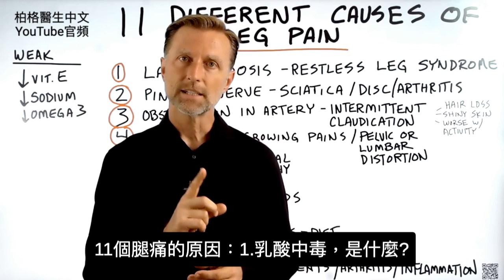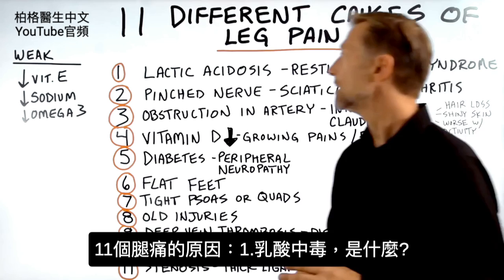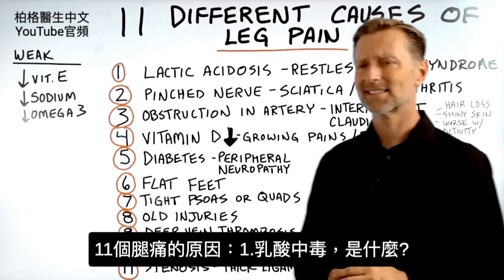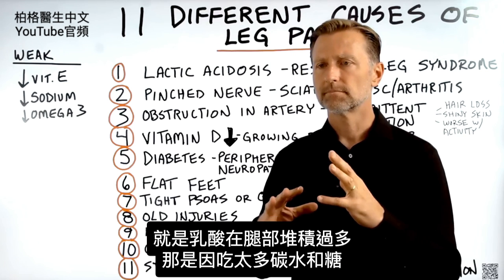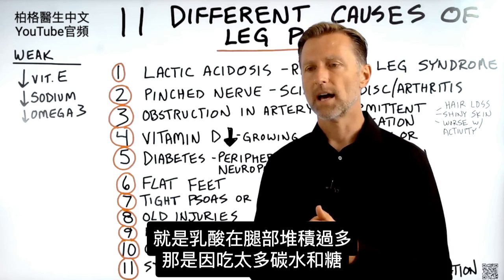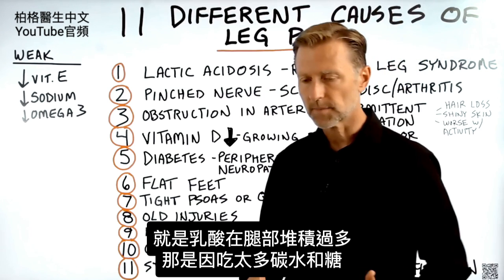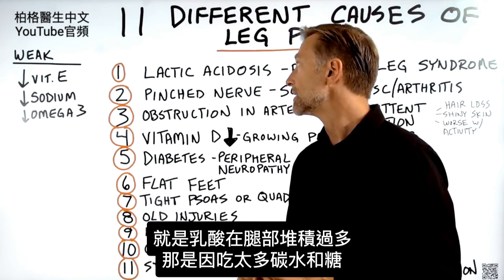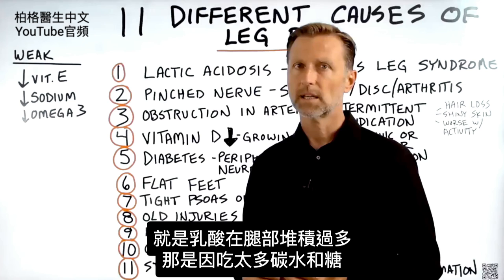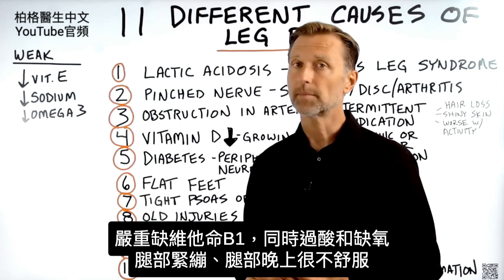Let's talk about 11 different causes of leg pain. Number one: lactic acidosis. Without getting too technical, it's a condition where you have too much acid in your legs — lactic acid — and that is coming from your diet. You're consuming too many carbs and sugar, and you're severely lacking vitamin B1.